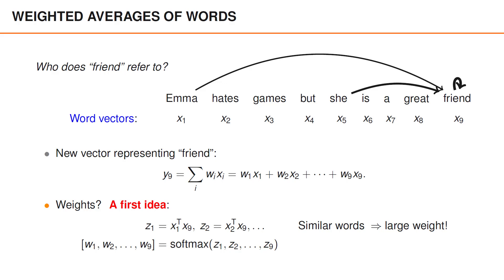this would give an inner product which is large and thereby a large z value for the word she.